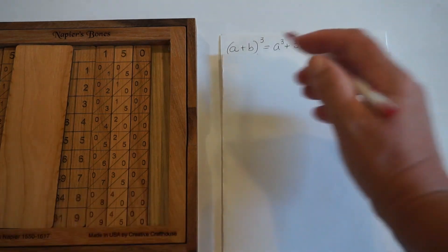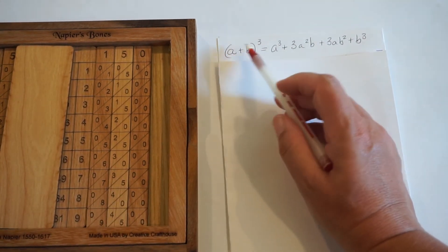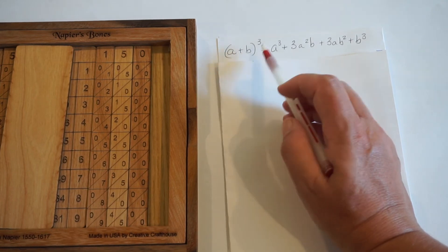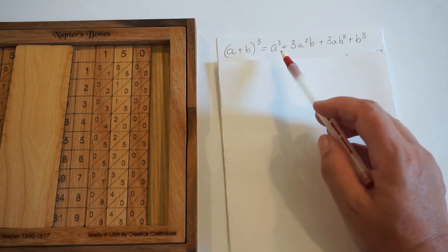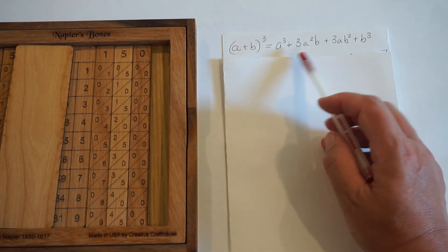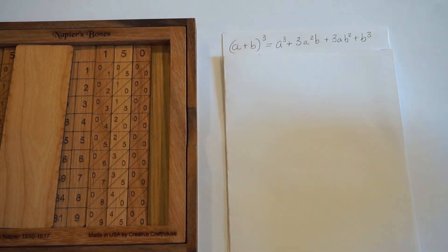So if we think about our original number as being a 2-digit number that's been cubed. So a is our 10s place digit, and b is our 1s place digit, and we're cubing it. If you expand that, you get this expression, a cubed plus 3a squared b plus 3ab squared plus b cubed.